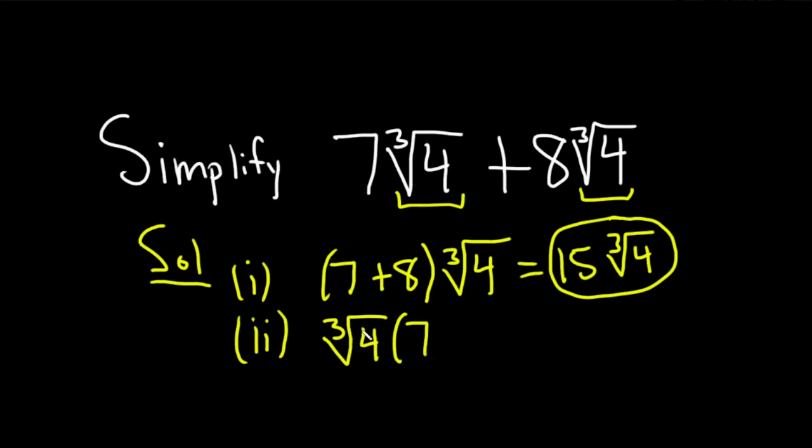And what do you multiply by the cube root of four to get this? Well, eight. So this is cube root of four times 15. But generally you want to put the number in the front because it's not in the cube root, so there's no confusion. This is 15 cube root of four.